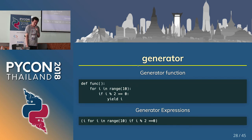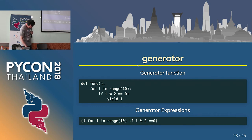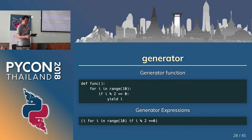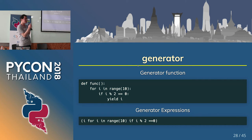Next, generator. Do you use generators? I like generators, and I recommend not using the dot append method for lists — consider using a generator instead. It uses less memory. The top example is the generator function, available since Python 2.2. The bottom is the generator expression, available since Python 2.4.